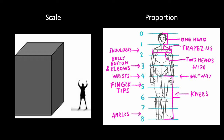Proportion is the relationship in size between a work's individual parts and the whole. While scale is the relationship of the size of one thing in comparison to another, proportion is the relationship between the parts and the whole — the size of the parts versus the size of the whole thing. The human figure is a great example of this. Generally, artists render the proportions of human figures in terms of an average or idealized body.